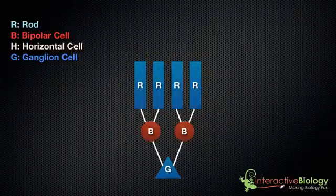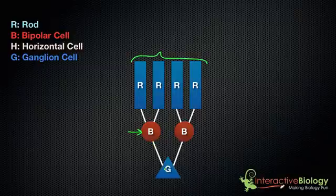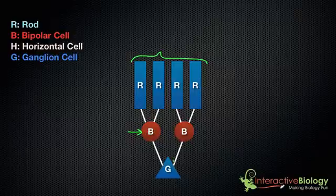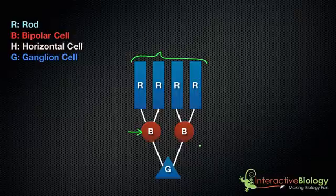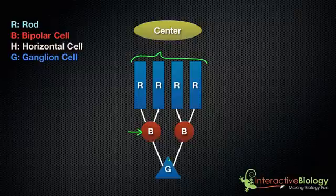Here we have four rods, and those four rods are making synapses with bipolar cells, and the bipolar cells are connecting to this ganglion cell. So this ganglion cell connects to two bipolar cells that connect to a total of four rods. When we have this configuration — the rod directly connected to a bipolar cell that is directly connected to a ganglion cell — we call this the center of that ganglion cell's receptive field. Any stimulation that results in activity in these rod cells is considered to be in the center of that ganglion cell's receptive field.